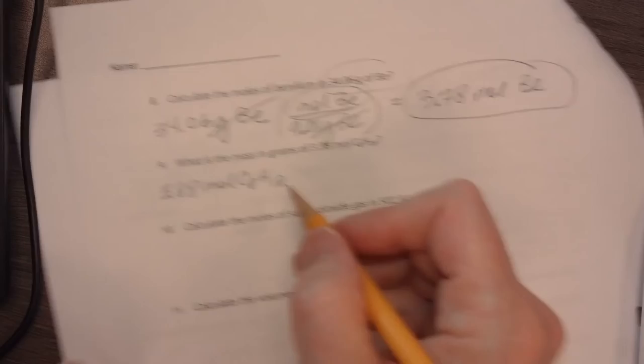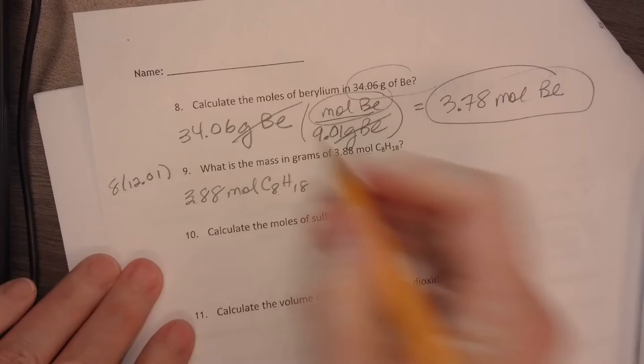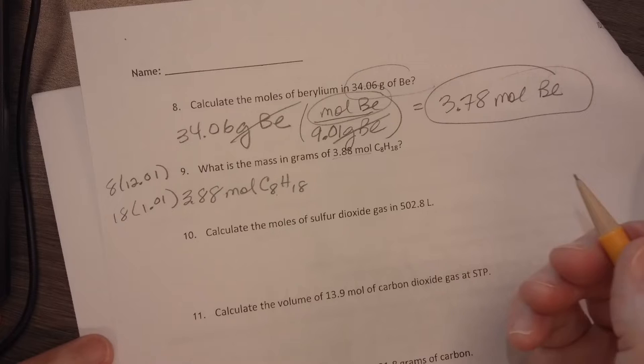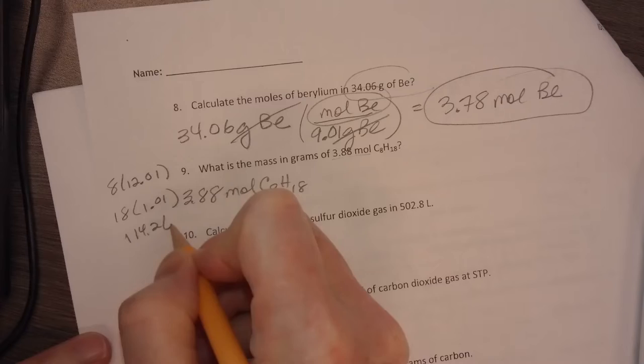I have 8 times 12.01 and 18 times 1.01. Again, I'm getting that from the periodic table. By now, you hopefully know carbon is 12.01 and hydrogen is 1.01. When I multiply those out, I get 114.26.